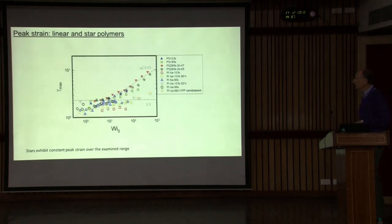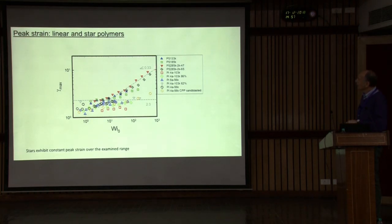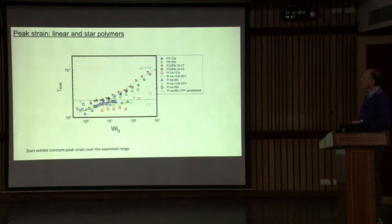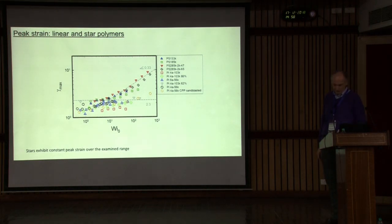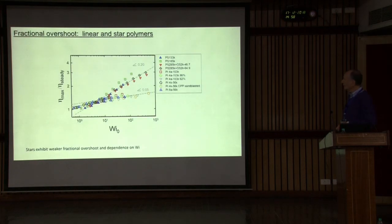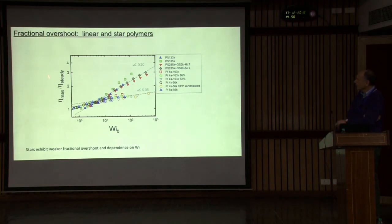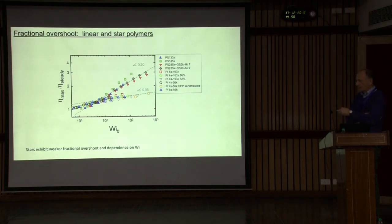When you go to stars, plotting against the terminal Weissenberg number — since there are still issues as to what is the proper Rouse time of a star — the star data barely go beyond a constant value corresponding to orientation; it's more difficult to stretch the stars. Another indication of this deformation is the fractional overshoot. The overshoot in linear chains is much larger than in stars — there is a very clear difference.